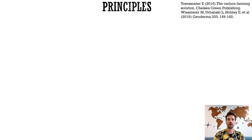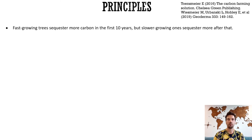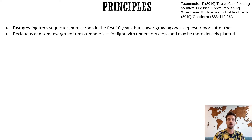Researchers have determined some general guidelines. First, fast-growing trees sequester more carbon in the first 10 years, but slower-growing ones sequester more after that. Slow-growing trees often have denser wood, and denser wood sequesters more carbon. Denser wood is also used for longer-lived, durable products after timber harvest, leading to long-term sequestration. Deciduous and semi-evergreen trees compete less for light with understory crops and may therefore allow a higher density of trees with higher carbon capture.